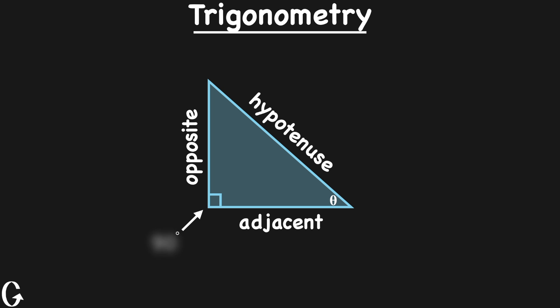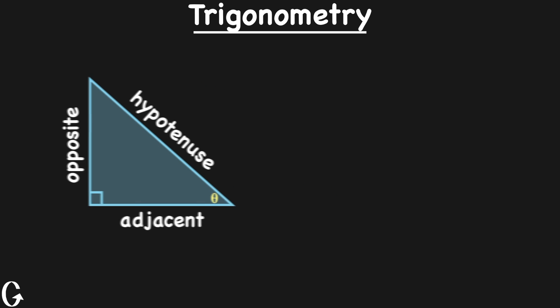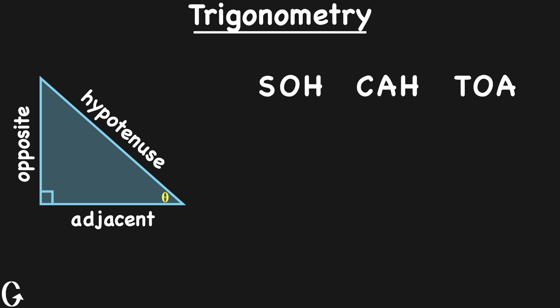Okay, so let's turn our attention to this famous mnemonic, SOHCAHTOA. The S stands for the sine function. The C stands for the cosine function. And the T stands for the tangent function. The O stands for the opposite side. The A stands for the adjacent side. And I think you might have guessed it. The H stands for the hypotenuse.